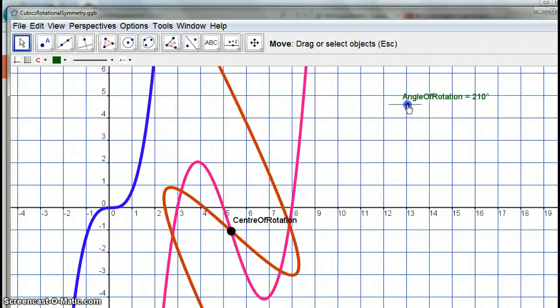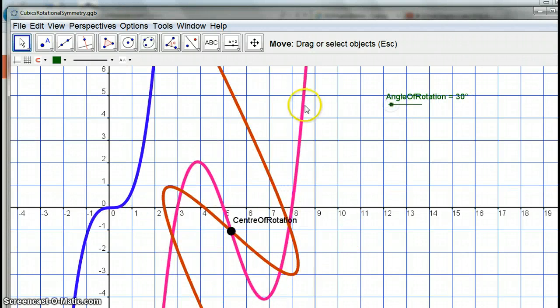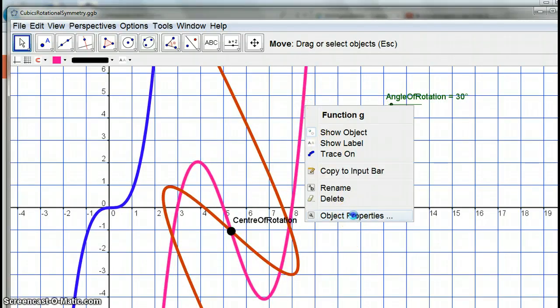Can you see it's got rotational symmetry of degree 2? Because it does a full turn, it maps onto itself, but with half a turn, it also maps onto itself. So if I was to change this graph,